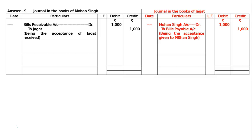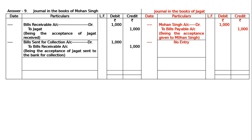Then, go back to the question. Mohan Singh sent the bill to his bank for collection. Mohan Singh is sending the bill for collection — write down in the books of Mohan Singh: Bill Sent for Collection Account debited to Bills Receivable Account, being the acceptance of Jagat sent to the bank for collection.